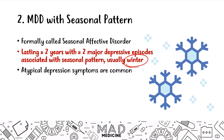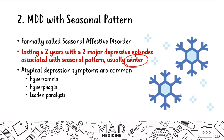Patients with MDD with seasonal pattern also have atypical depression symptoms — they're going to have hypersomnia, hyperphagia, and lead-in paralysis as well. Think about it: when inside during winter, they'll probably eat a lot because they're depressed, and they may sleep more and longer since it gets dark sooner and they don't want to go outside.